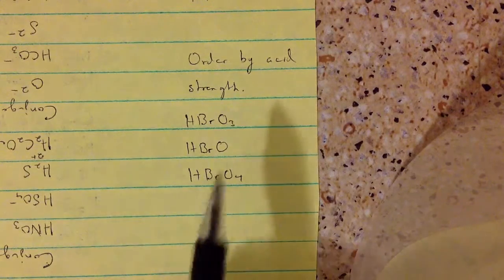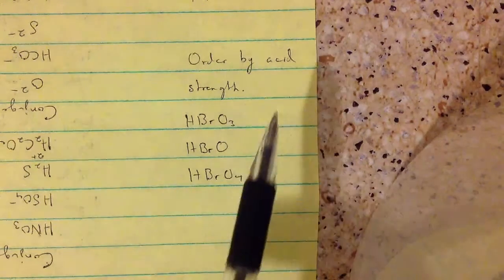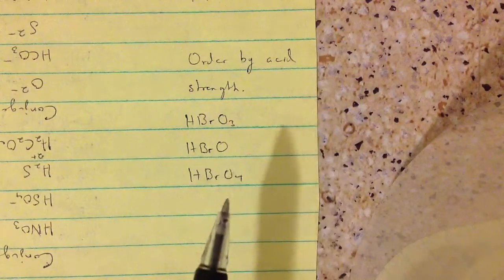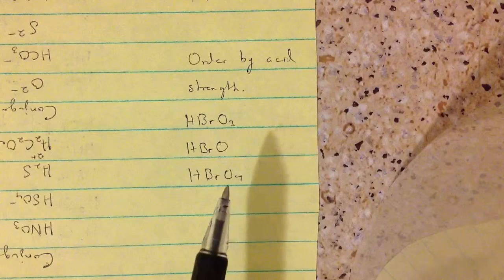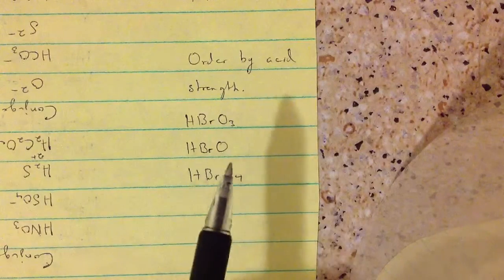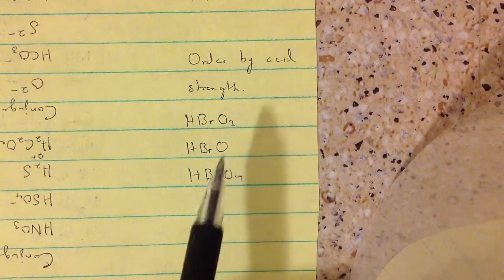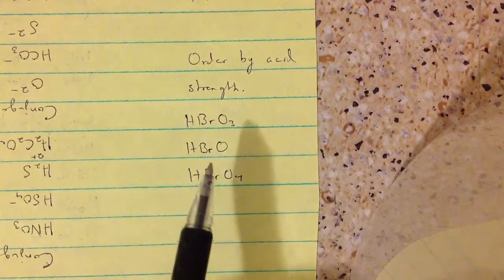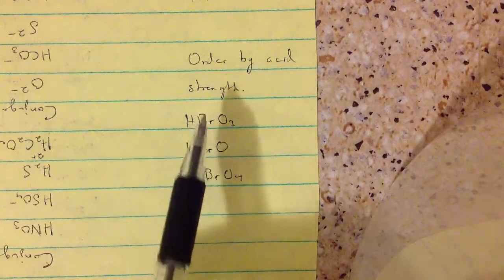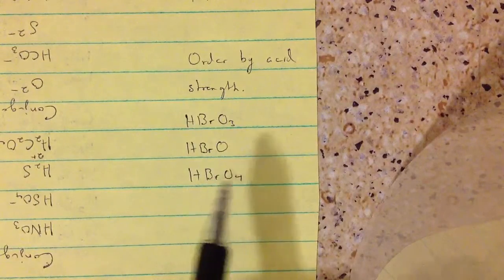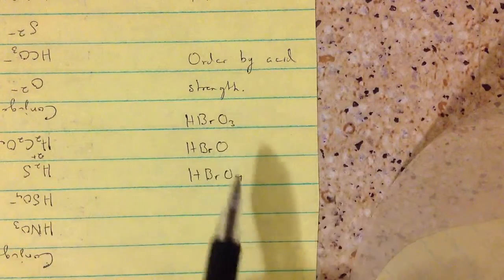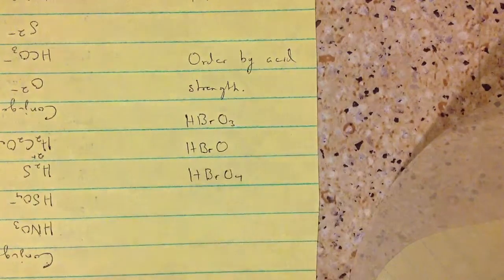If the question is to order by acid strength and you have these three acids, you can see that these three are oxoacids, and the central atoms are the same. So the only thing different are the oxygens.